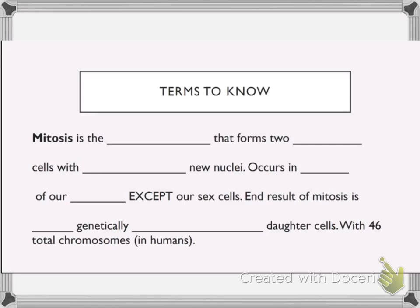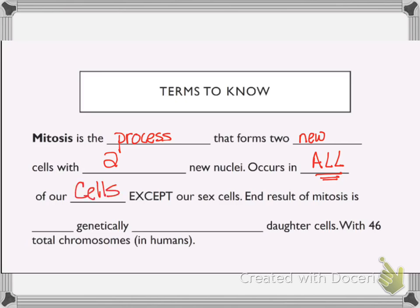First, terms you need to know: mitosis is the process that forms two new cells with two new nuclei. Nuclei is just how you say nucleus in the plural form. It occurs in all — capitalize it, underline it — all of our cells except our sex cells.